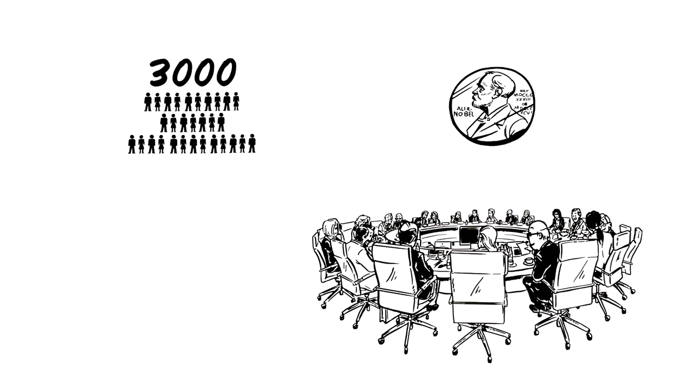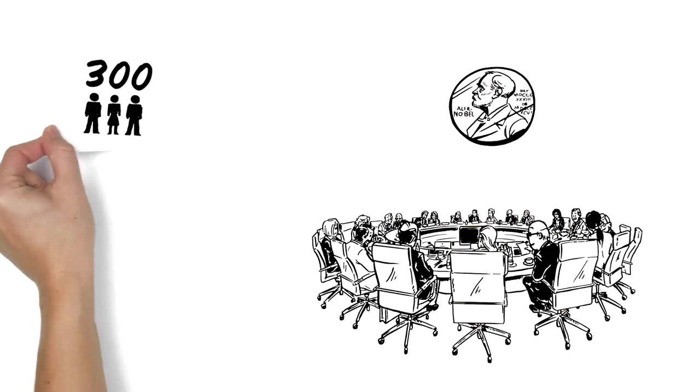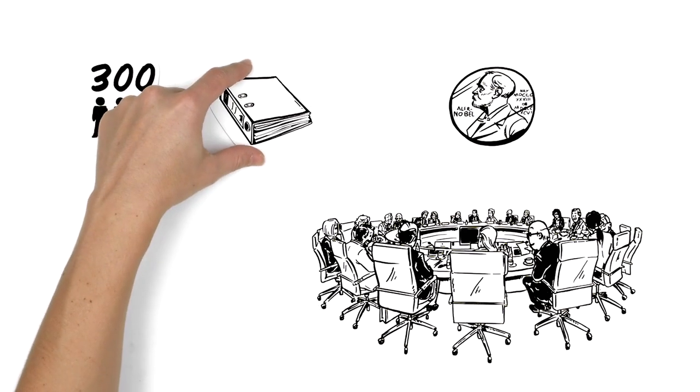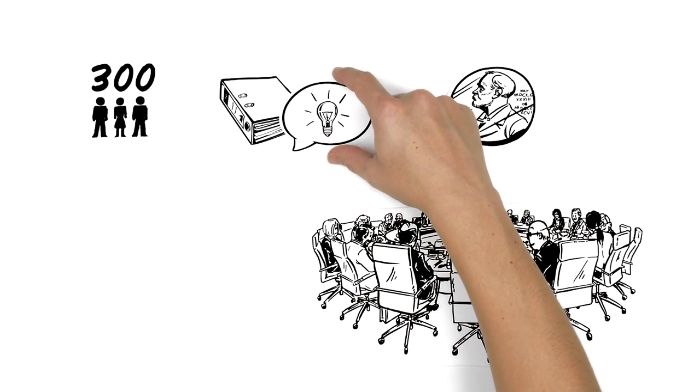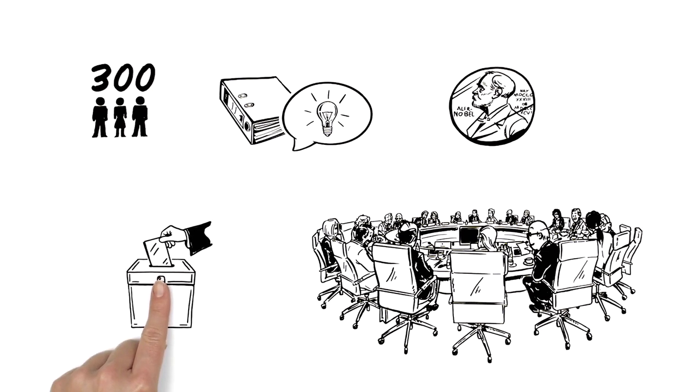From these, the Nobel Committees choose around 300 potential recipients and prepare a report reflecting the advice of experts. The prize awarding institutions then select the laureates by a majority vote.